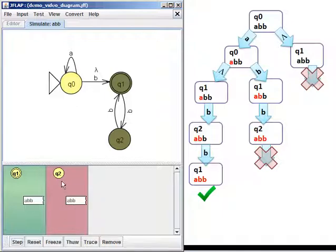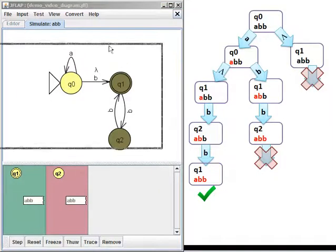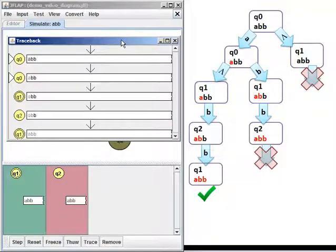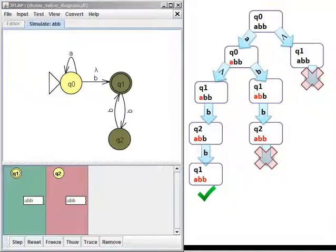You can click on one of these options, like let's click on the green one to select it. And then I can say trace. Pops up a path that shows you what was this green ABB path. And it shows you that, just like we have our winning path here, we started at Q0, went to Q0, went to Q1, went to Q2, went to Q1. And so that's our winning path here.